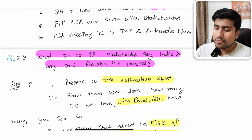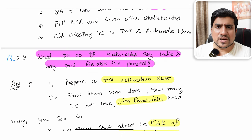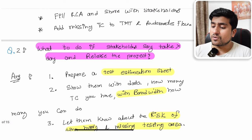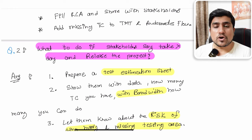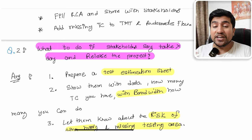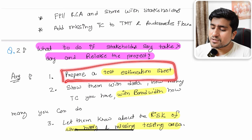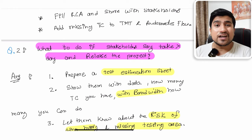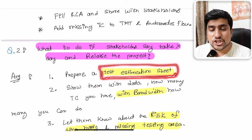Question number two: what do you do if stakeholders say there is very limited time to release a product — for example, just one day? This is a very common scenario where your product manager or designer says there is very little time and asks you to release as soon as possible. What you need to do is prepare a test estimation sheet. I've seen people miss this answer — they forget the test estimation sheet entirely.